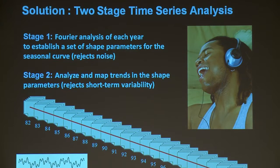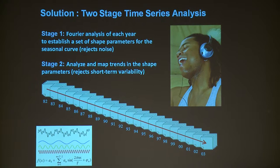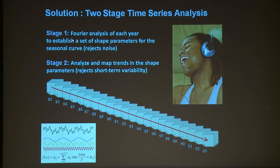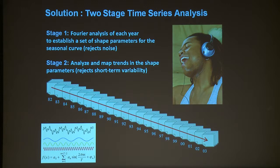We had to develop a whole new procedure, and our technique was to rely upon the basic technology that goes into noise-canceling headphones. The technique is called Fourier analysis, and we go through two stages. In the first stage, we use Fourier analysis to break down a complex signal into a series of regular sinusoidal forms. Based upon those, we can describe the shape of the seasonal curve — the progression of the vegetation over the course of the season — in a very generalized fashion. In doing so, we can reject noise caused, for example, by cloud cover as a common contaminant.